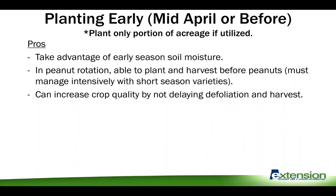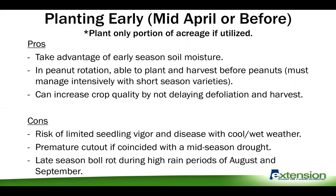There are some pros to planting early — mostly taking advantage of early season soil moisture. One big advantage is if you have a large peanut operation: with peanuts being planted in mid-May, you're able to plant ahead of your primary peanut operation. Also, if you manage intensively and use short-season varieties, you can usually harvest your cotton before your peanut harvest begins, helping your cotton quality by avoiding delays in defoliation.